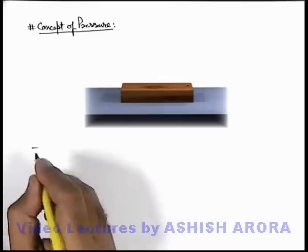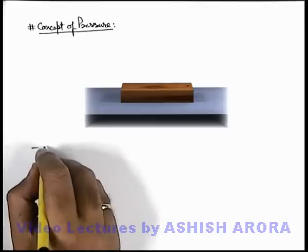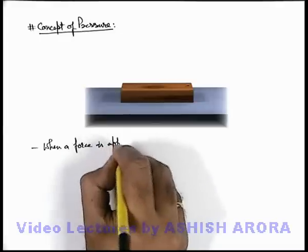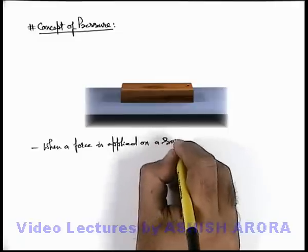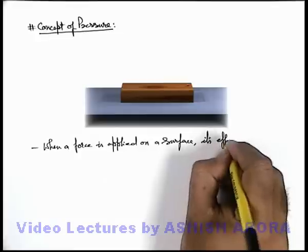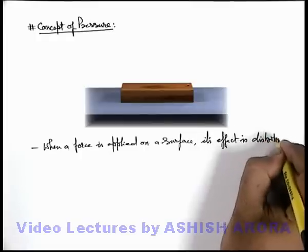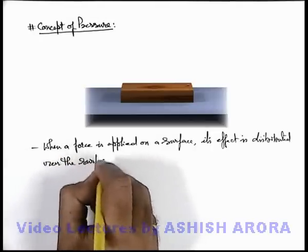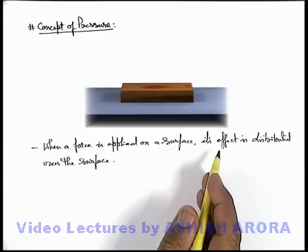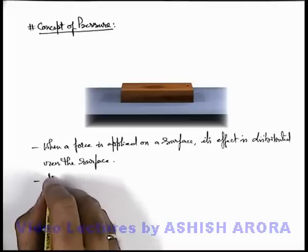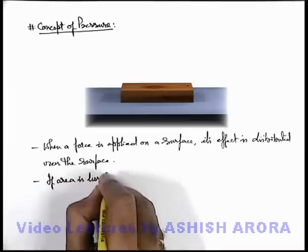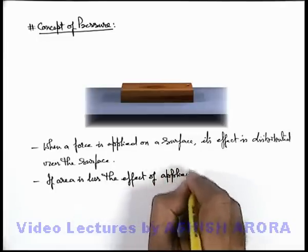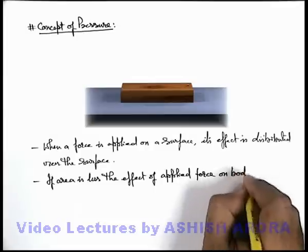Now here we can write down some important facts to understand this concept. The very first point is: when a force is applied on a surface, its effect is distributed over the surface. So if the surface is large, the effect per unit area will be less. And if the area is less, the effect per unit area is more because it is distributed. In the second case, the effect of the applied force on the body is more.